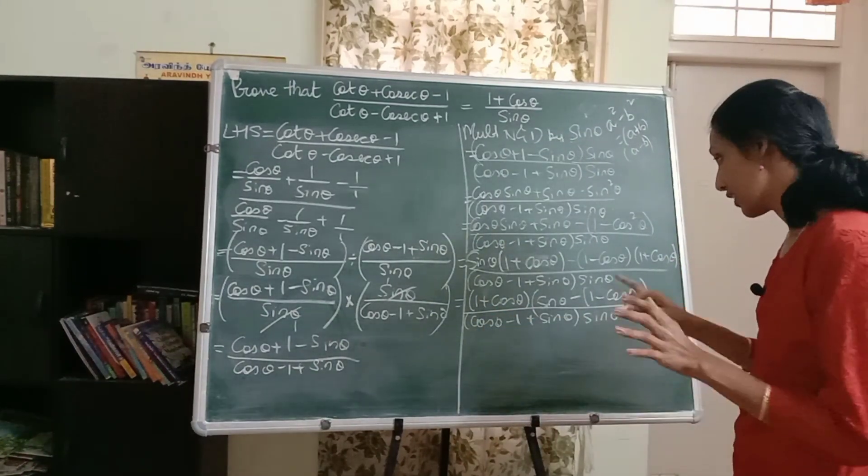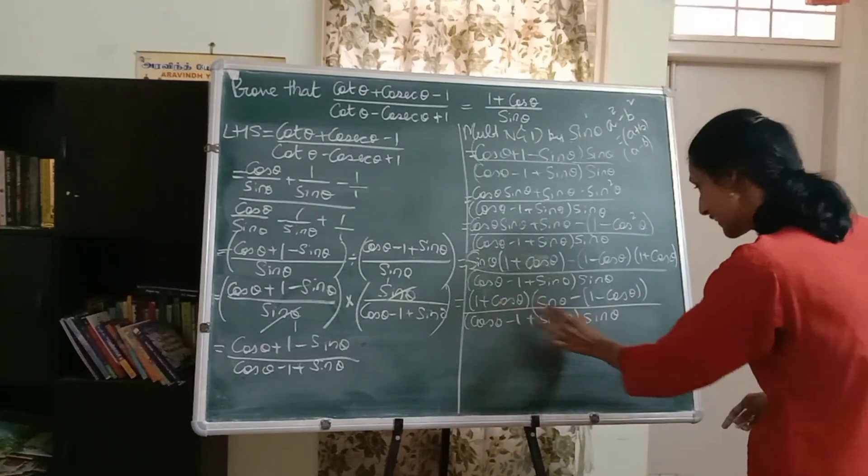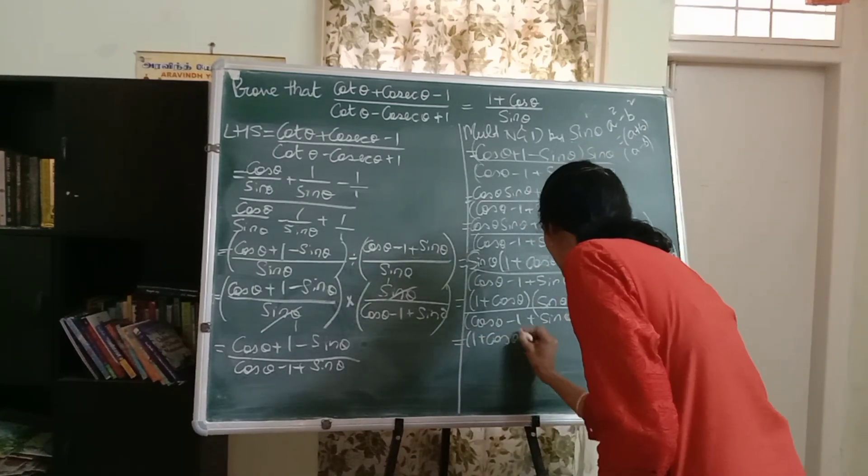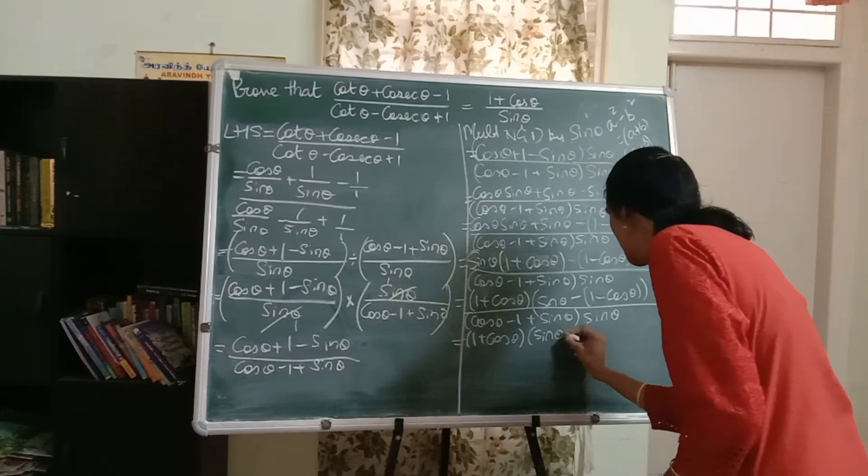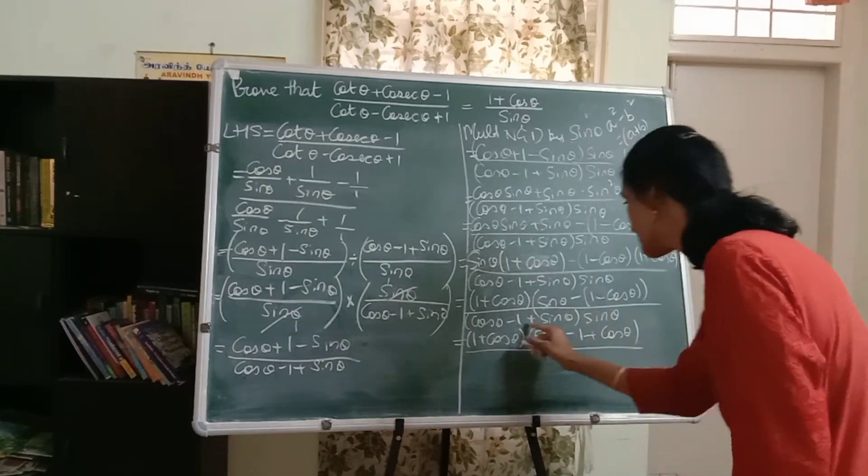We are coming very close to the answer. One plus cos theta and sine theta, which we want, is already there. Let me just open up the bracket over there. So sine theta minus one plus cos theta is what I'm getting. And see, just see the same term is in the denominator.